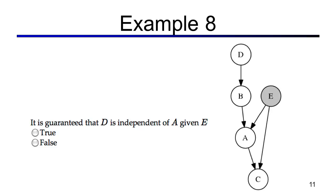Let's look at d and a given e. There's only one path connecting d and a. It's a causal chain with the middle node unobserved, so this is an active triple. This triple constitutes the entire path, so the path is active. Once we find an active path, we're done — we cannot guarantee independence.